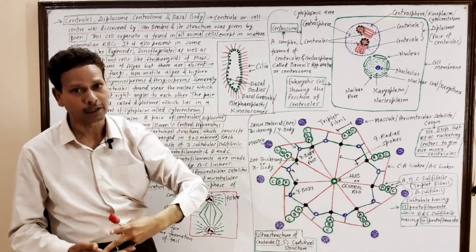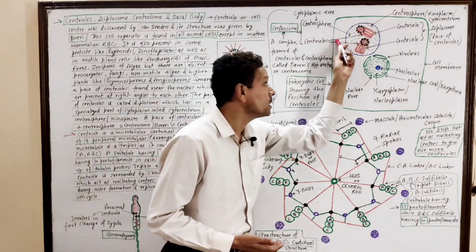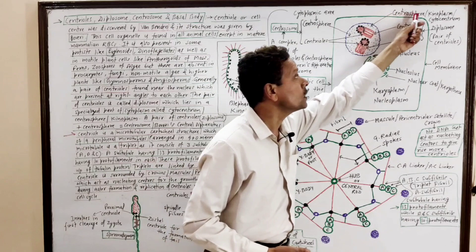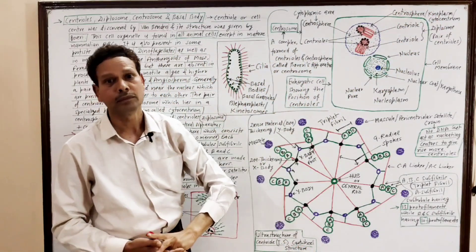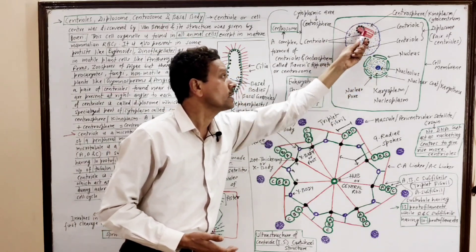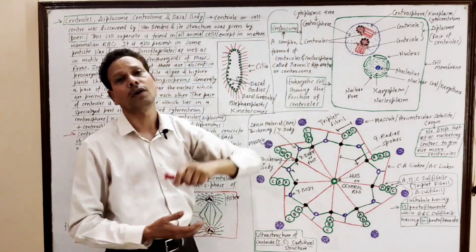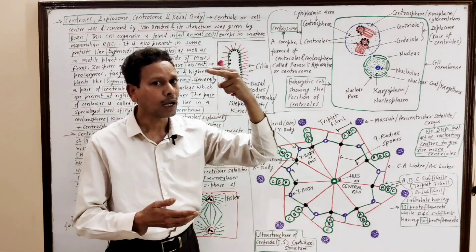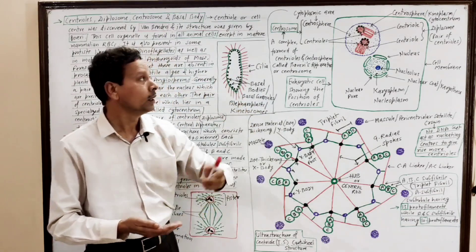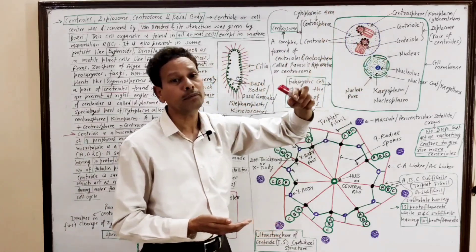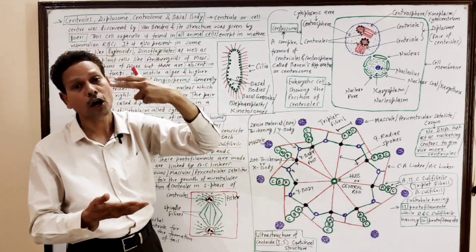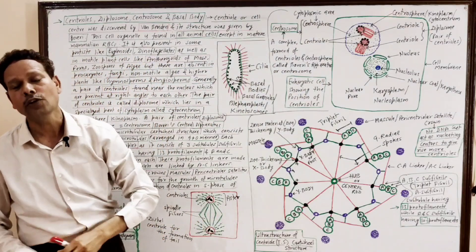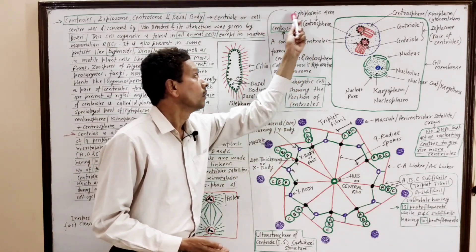The centrioles are found in pairs — so these are the diplosome — embedded in a clear part of cytoplasm without any cell organelles, that is the centrosphere. This complex, formed by a pair of centrioles and the centrosphere, is the centrosome. These are very important terms for all competitive exam students.